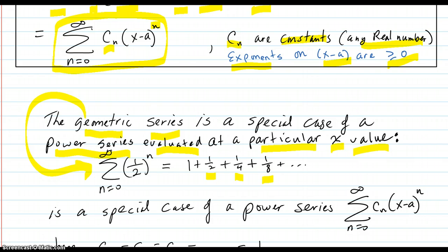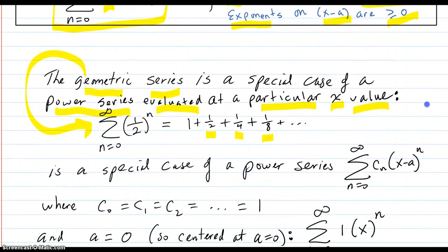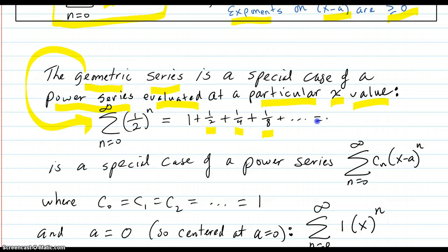Sum from n equals zero to infinity, that's a geometric series and it sums up to 2.